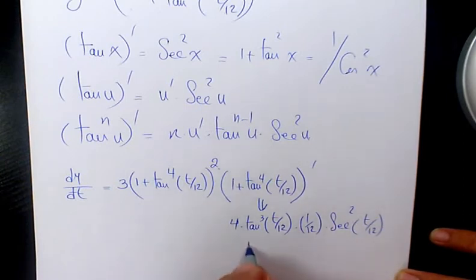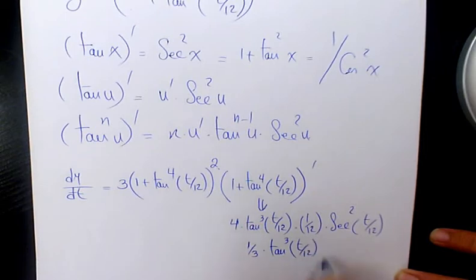And you simplify it. It's going to be 1 over 3 times tan to the power of 3 t over 12 times secant squared t over 12.